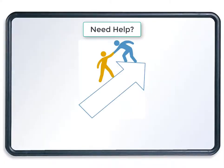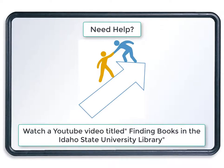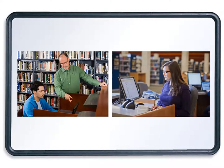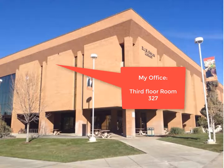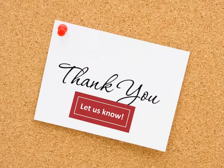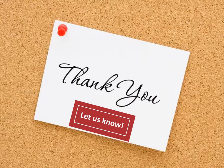If you need assistance finding a book, or you've never looked for a book in the library before, you may consider watching a YouTube video titled 'Finding Books in the Idaho State University Library' that shows how to find a book in the physical library using a call number. Of course, we have librarians and library student workers who can help you find books in the building as well, so please do not hesitate to ask us for help. My office is on the third floor of the Obler Library, and I would be glad to help any student locate books. Thank you for watching this video. If you have any questions, please let us know and we will do our best to answer them.